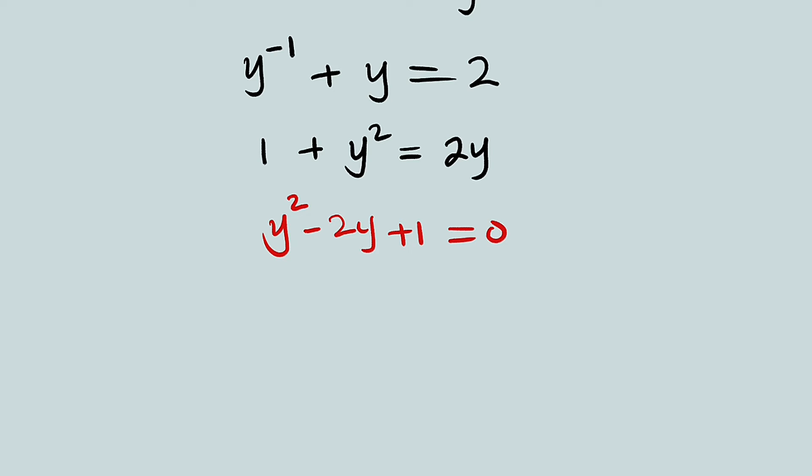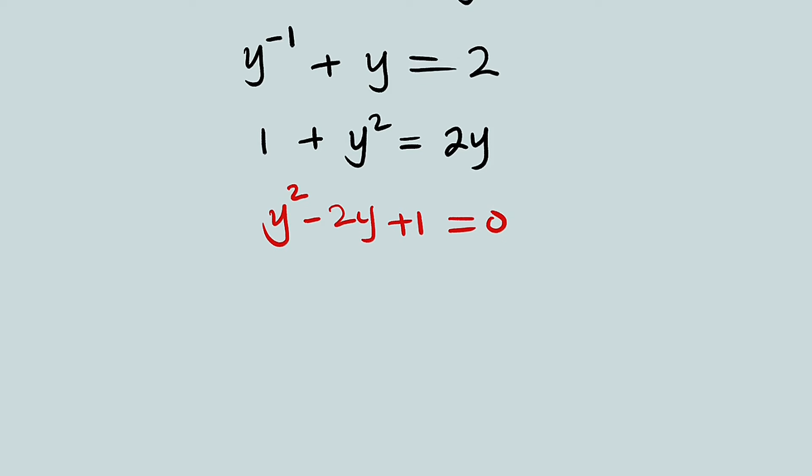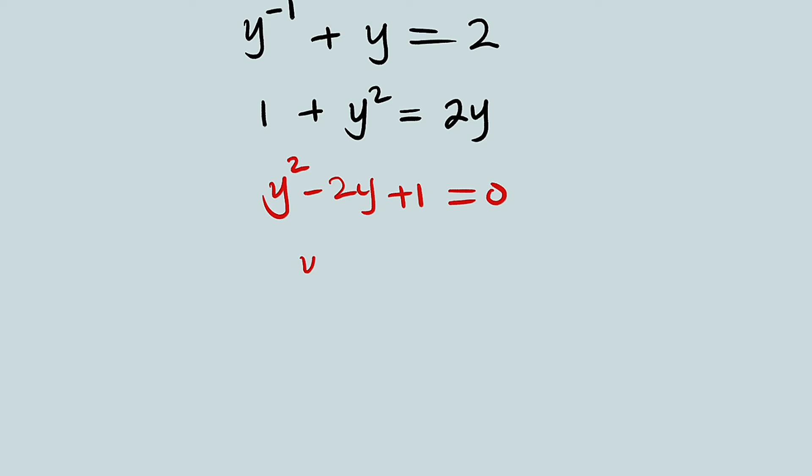We have a quadratic equation that we can solve by factorization. Two numbers that can be multiplied to get 1 and added up together to get negative 2 are negative 1 and negative 1. This implies that this is a perfect square quadratic equation. So, we can write it as y minus 1 all squared, and the whole of this equal to 0.